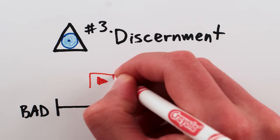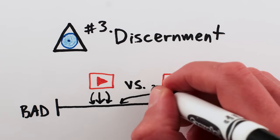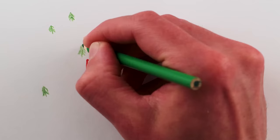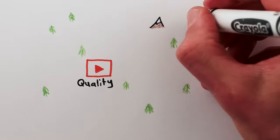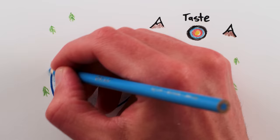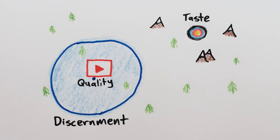Discernment is how well you can perceive quality, how accurately and reliably you can tell how good something is. If quality is where you actually are, and taste is where you want to be, then discernment is how accurately you know where you are. It's the size of that blue circle of uncertainty on your GPS.